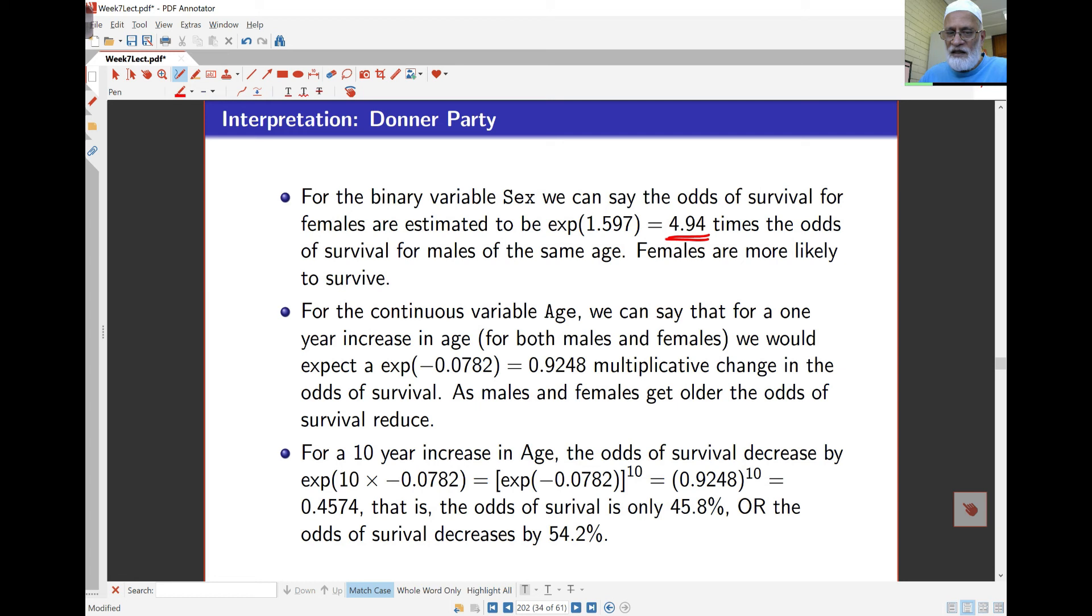If I look at something like age, given that it's either for males or females, then the odds of survival for a year difference in age would be exponential of negative 0.0784, which is 0.9248. So every year older a person is, the odds of survival will be 0.92 times that. In other words, there's a change in the odds of survival. An older person by one year has 92.48% of the odds of survival for a person who was younger by one year.